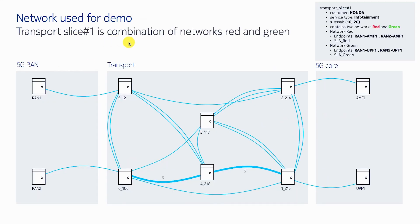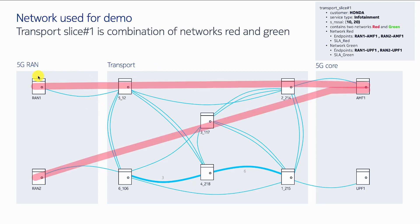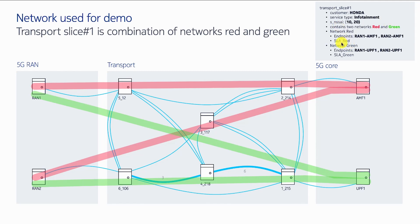To create transport slice one, the customer is Honda, service type is infotainment, and the network slice ID (NSSAI) is 10 and 20. We have two networks: red and green. Network red is the control plane, which connects RAN 1 and RAN 2 to AMF, and network green is the user plane, which shows connectivity between RAN 1, RAN 2, and UPF. Each of these has a specific SLA — SLA red and SLA green — which may or may not be the same. The combination of these two networks is the first transport slice.